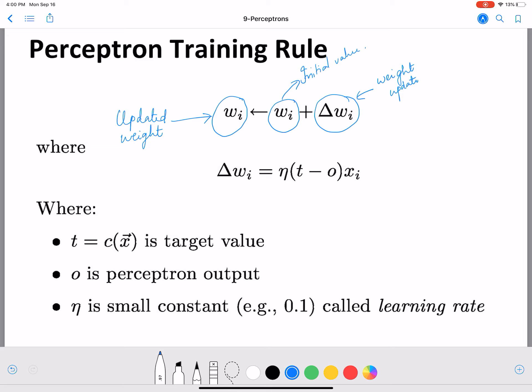Now the only thing here we need to understand is Δw_i, how to calculate that. So Δw_i is given as η times (t - o) times x_i, where w_i is the weight corresponding to feature x_i.